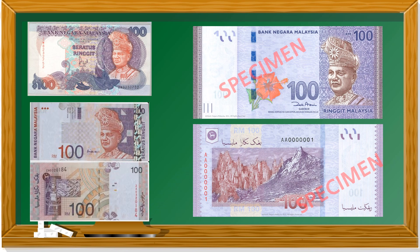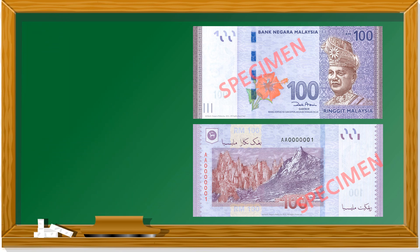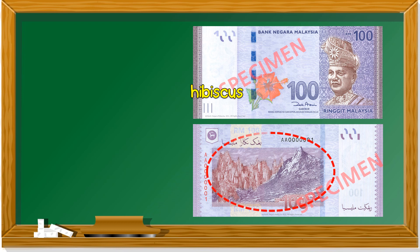Now we look at the hundred ringgit notes. They are all purple in color. These are the old notes, and we can still find these being used. On the new note, in front, what flower is this again? Hibiscus. At the back, we have a picture of Mount Kinabalu - Kinabalu Park. Can you guess where Kinabalu Park is? It's in Sabah.